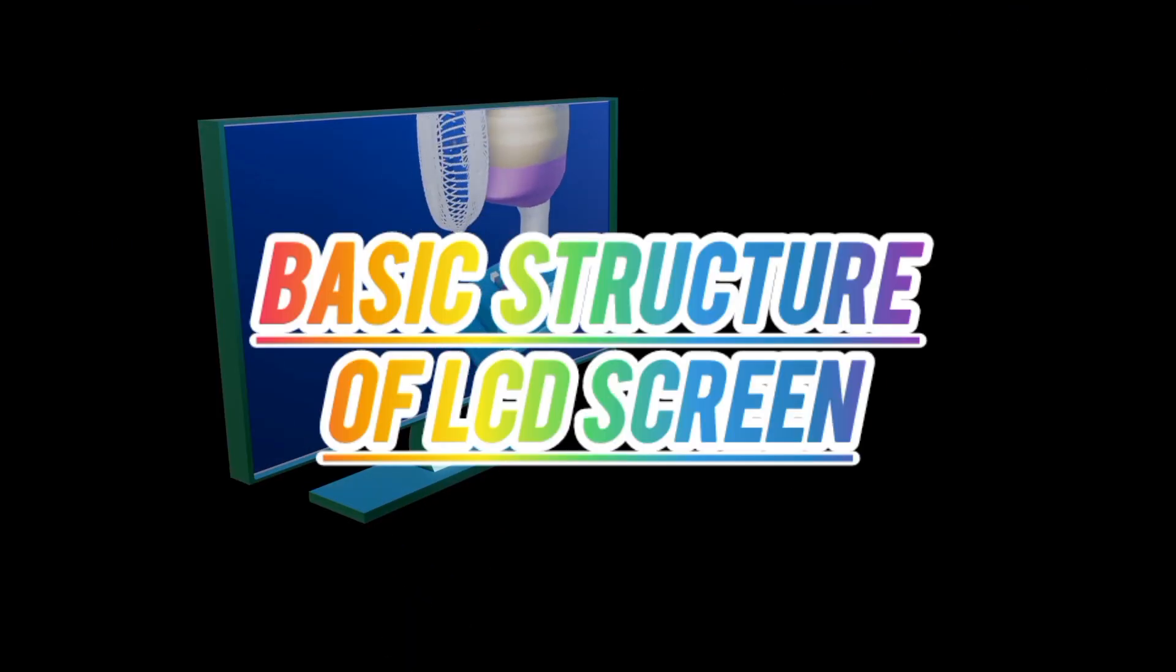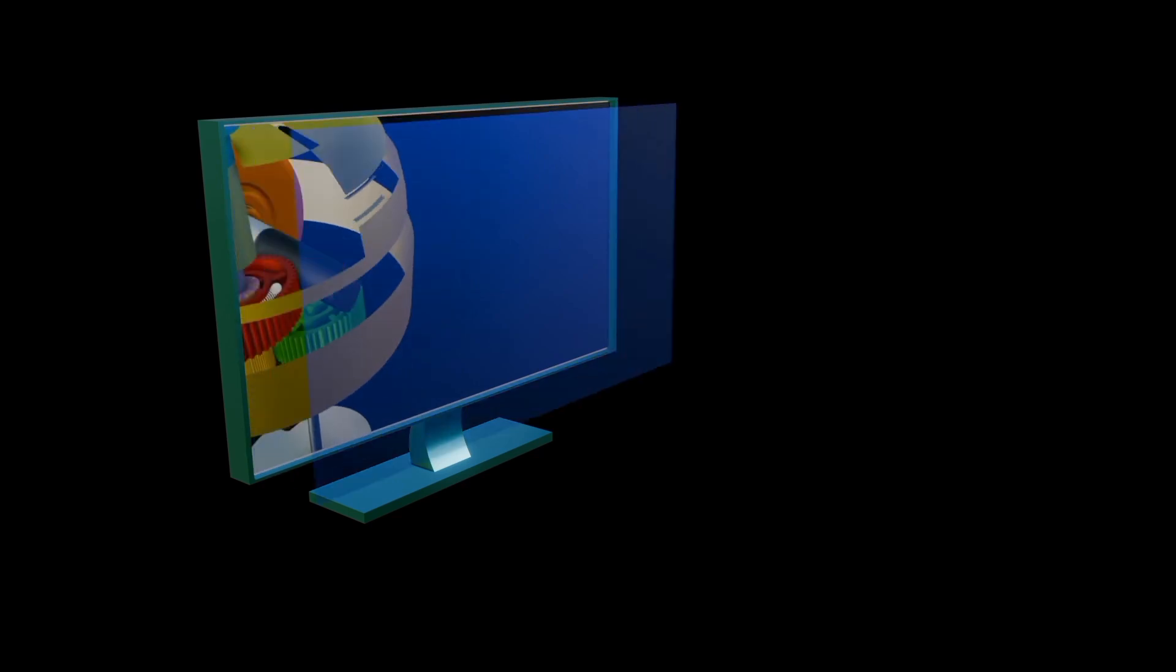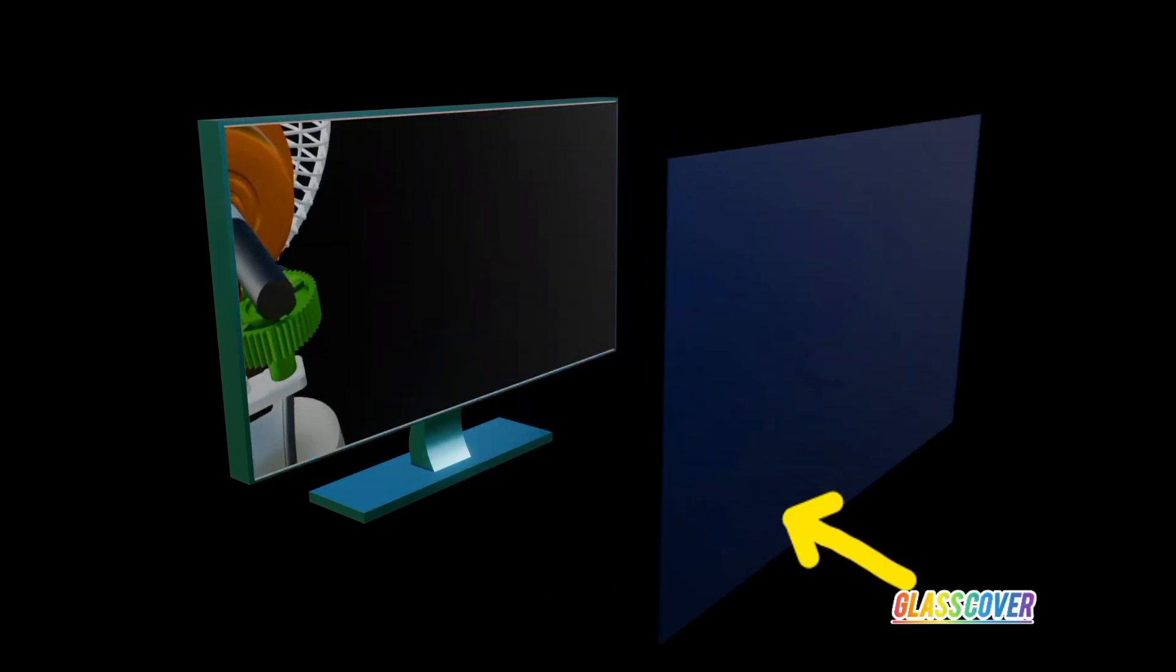Basic structure of an LCD comprises of: At the front we have glass cover. This is a protective layer that covers the entire display surface. It shields the delicate internal components from damage due to scratches, impact or pressure.